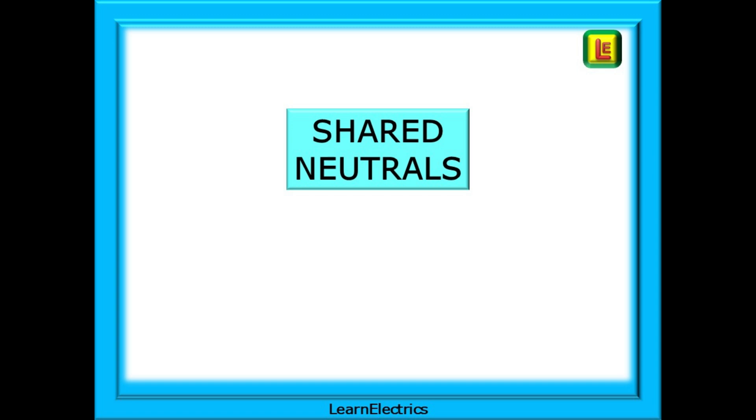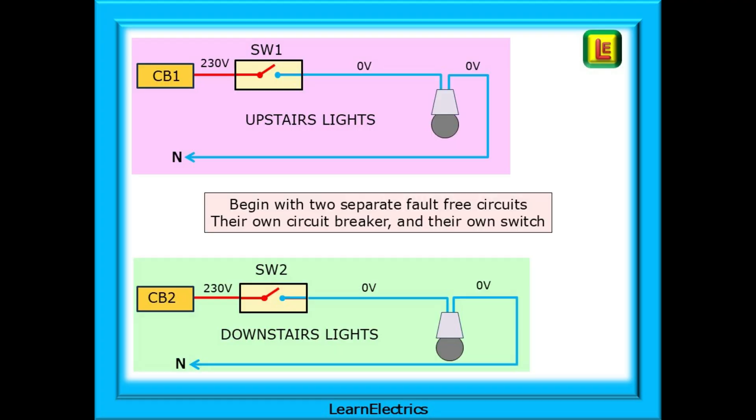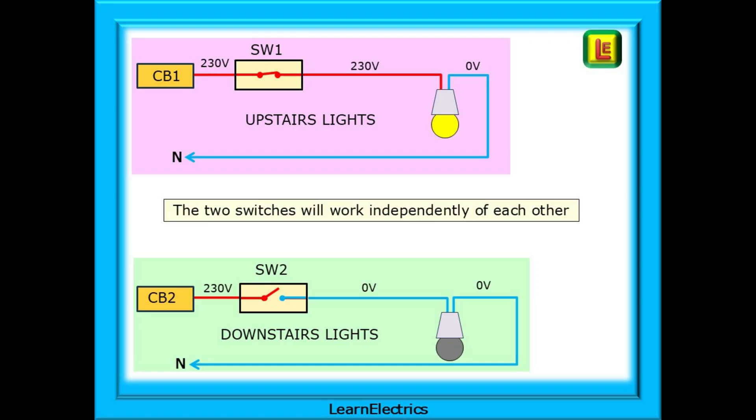Moving on to shared neutrals now. Do the circuits work and how can they become dangerous? Beginning with two separate fault-free circuits, each with their own circuit breaker and switch, an upstairs circuit and a downstairs circuit. The two switches will work independently of each other. SW1 controls the upstairs light and SW2 will control the downstairs light.